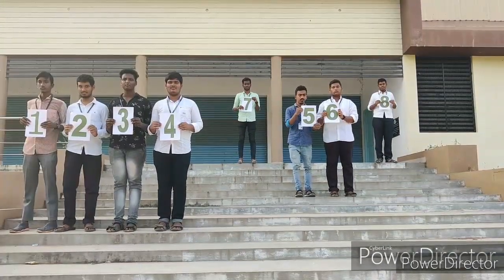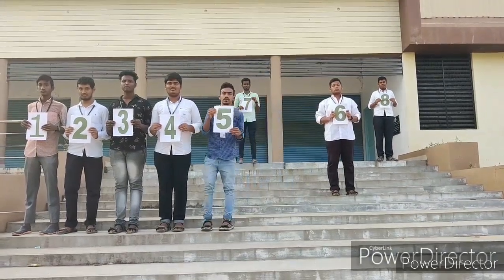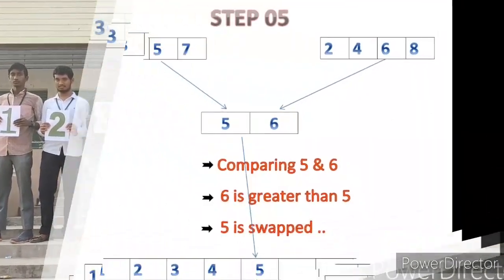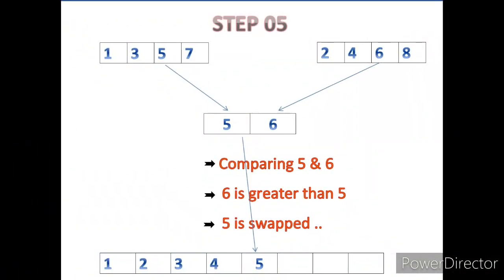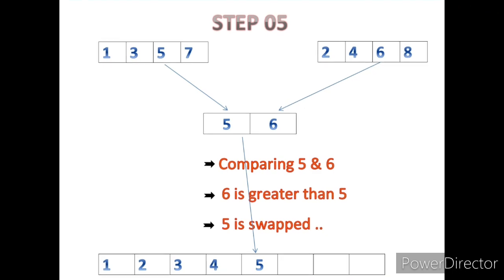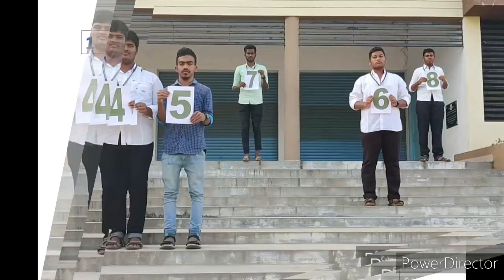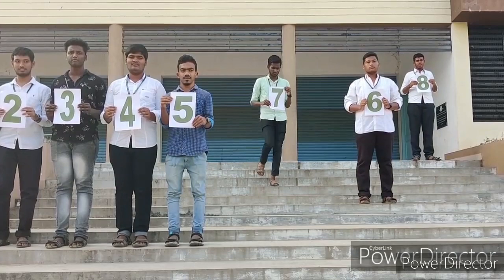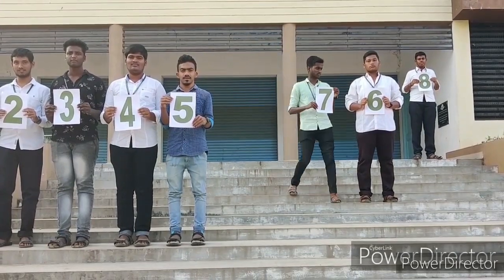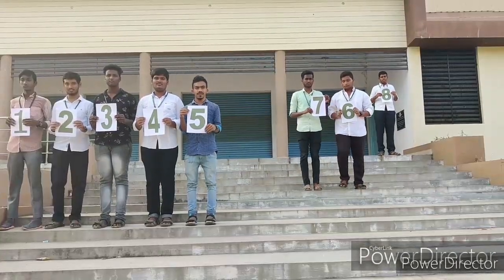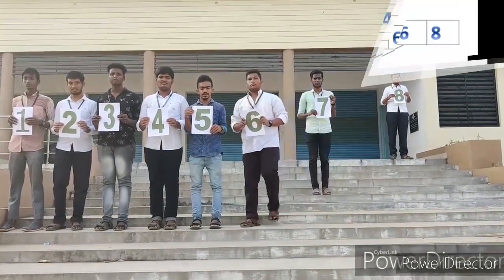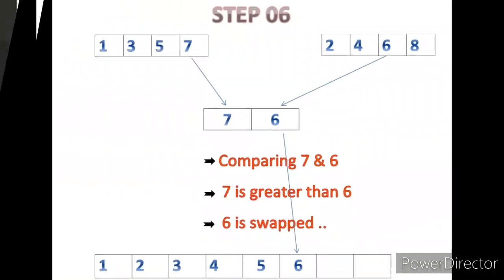Five remains in the array; six comes to compare with five. Five is lesser than six, so it is swapped. That is step five. Six remains in the array; seven comes and compares with six — six is lesser than seven, so it is swapped. That is step six.